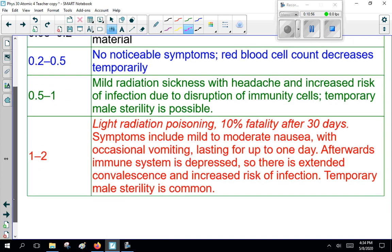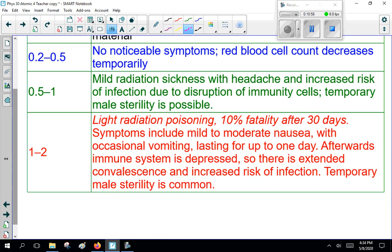Now, 1 to 2 sieverts is what we call light radiation poisoning. That's 10% fatality after 30 days, mild to moderate nausea, vomiting up to a day. The big thing here is your immune system is depressed, so you get worried about infection and health problems from that. And temporary male sterility. You'll see that mentioned a lot because the guys worry about it. It kills the sperm you're carrying. You make more.